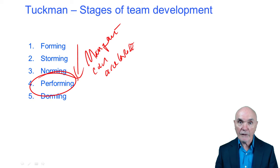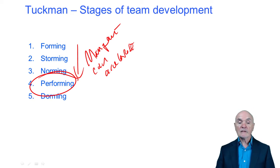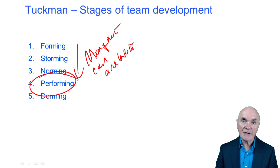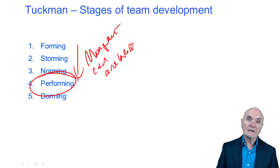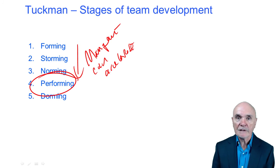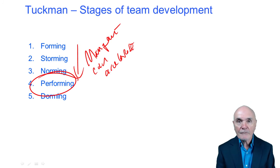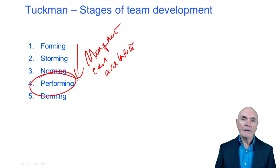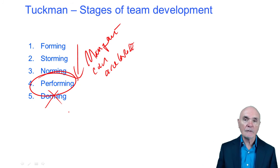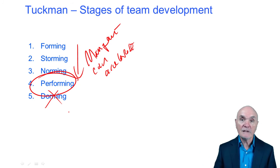The final stage, which might arise, is dorming. This is where we have met for the last three months, essentially achieved what we had to achieve, but we keep on meeting because we always meet on a Friday. So dorming — as in sleeping — it's a habit which we're doing but we're not actually achieving anything anymore. Rather than going on having rather useless meetings, the team, the group, really ought to be disbanded.